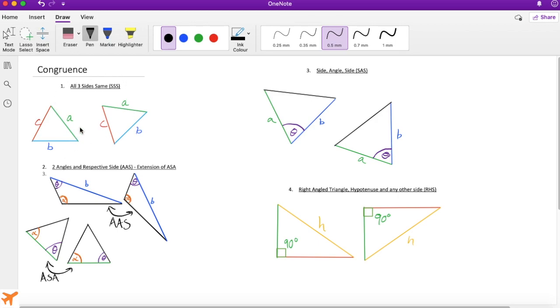Rule two: two angles and the respective side are the same. This is a more powerful extension of the angle-side-angle rule. If this angle followed by this angle and this length correspond in the exact same way to another triangle where the angles and length match in the same order—alpha, theta, length—then these two triangles are the same.